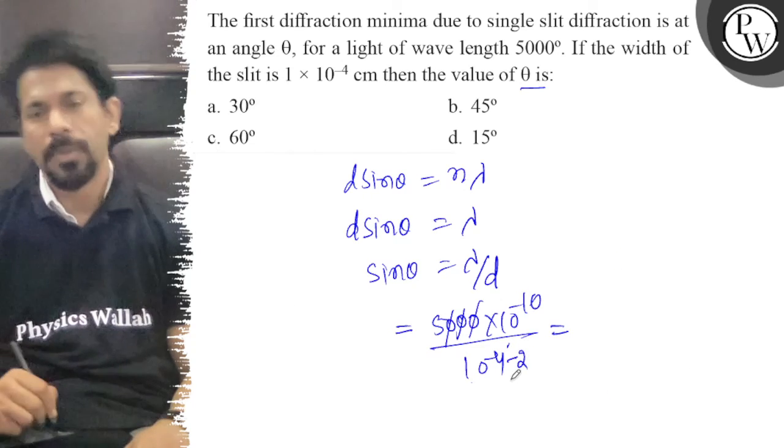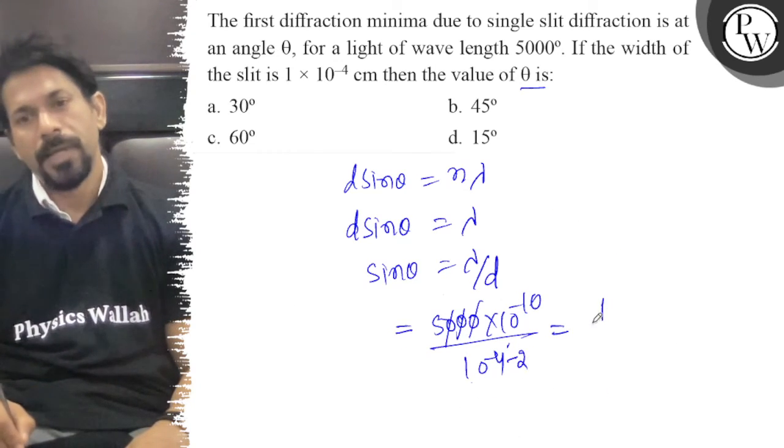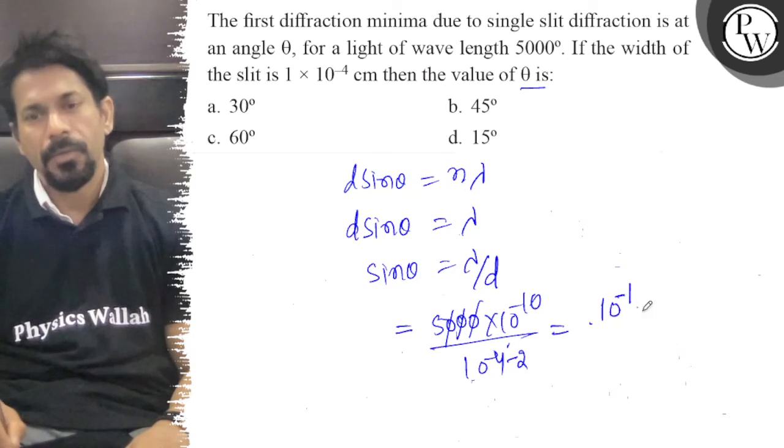Converting units: 1×10^-4 cm equals 10^-2. So this will be 10^-1 into 5.